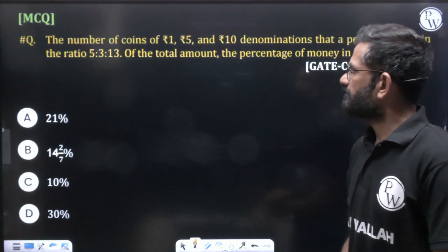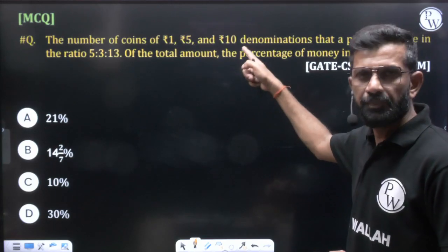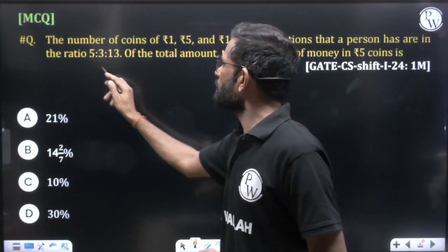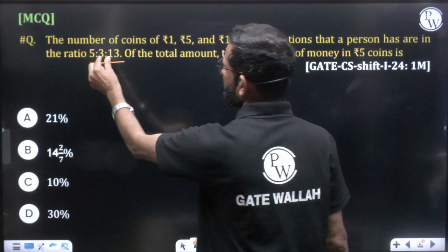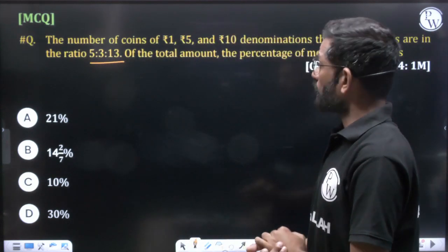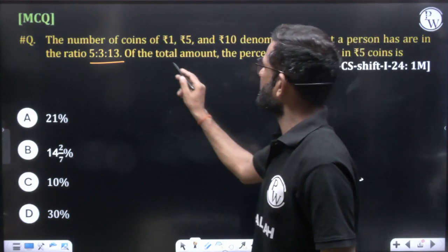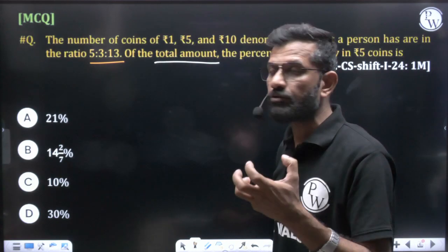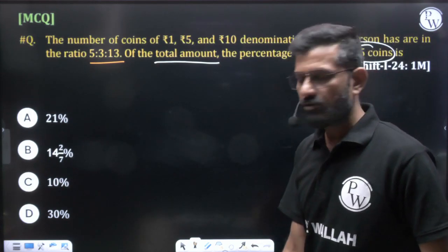The question states the number of coins of ₹1, ₹5, and ₹10 denomination that a person has are in the ratio 5:3:13 — meaning ₹1 coins are 5, ₹5 coins are 3, and ₹10 coins are 13. Of the total amount, we need to find the percentage of money held in ₹5 coins. This part you have to understand very clearly — they are talking about the total money.